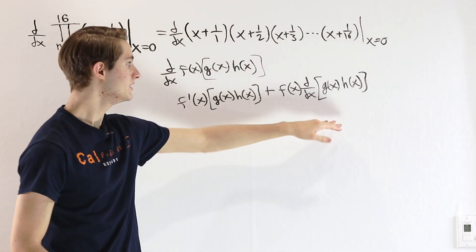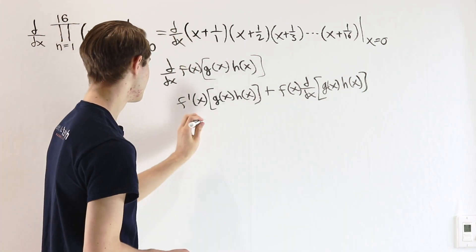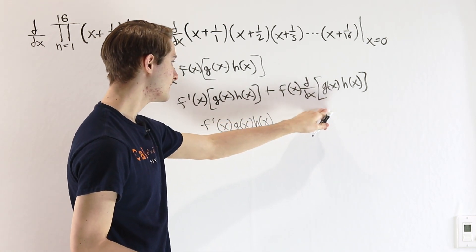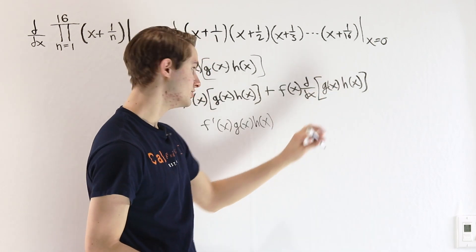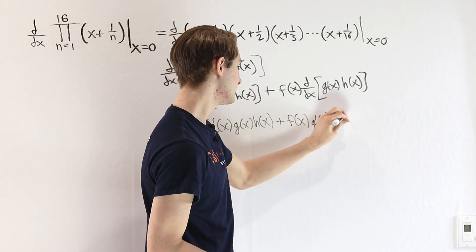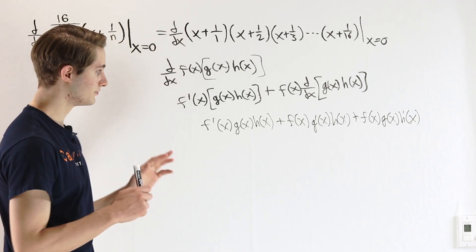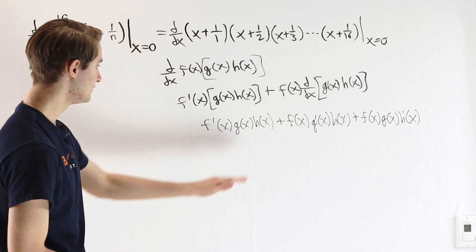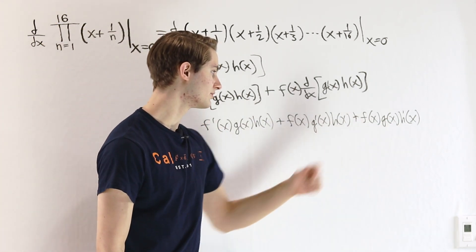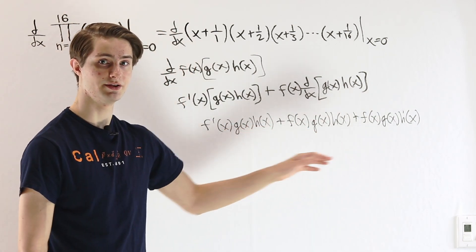That second product is a product of only two functions, so we can apply the product rule on it again. We get f prime of x times g of x times h of x, plus f of x times g prime of x times h of x, plus f of x times g of x times h prime of x. What we notice in this version of the product rule for three functions is that in each term, one of the functions is being differentiated — f prime, g prime, and h prime — while all the other functions stay the same, and then we add those together.